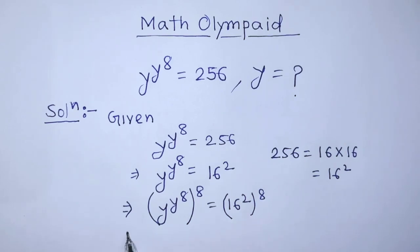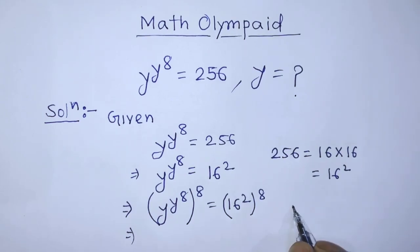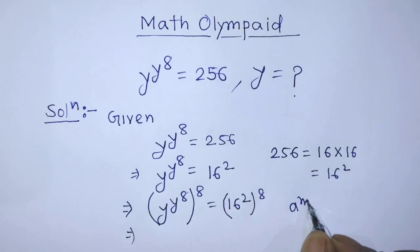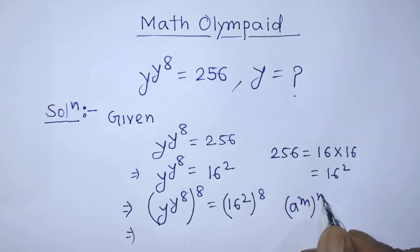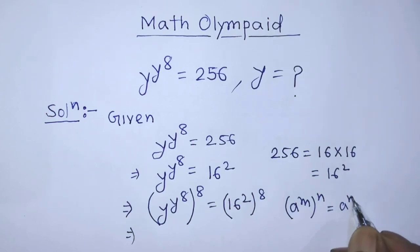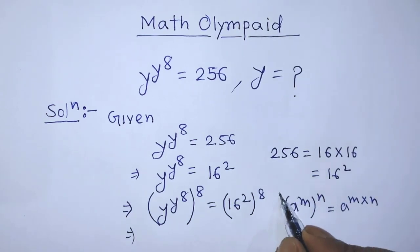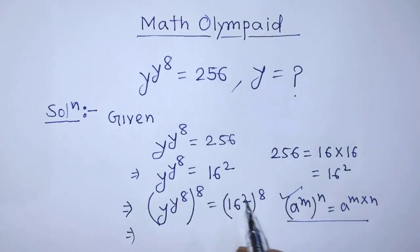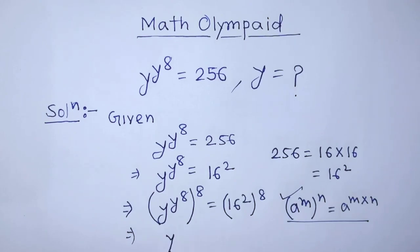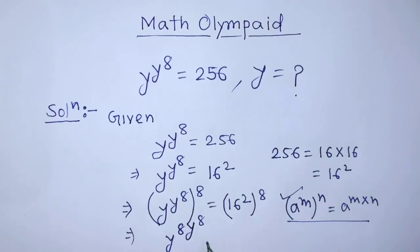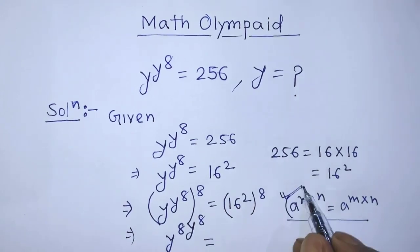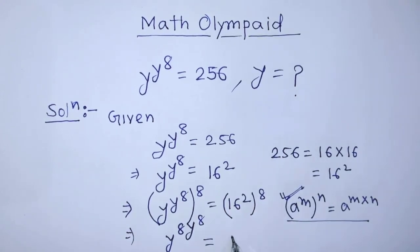To simplify the left hand side and right hand side of this equation, we have to apply the formula: a to the power m, whole to the power n, is equal to a to the power m times n. According to this formula, we can write: y raised to the power 8 times y to the power 8, is equal to 16 to the power 2 times 8.